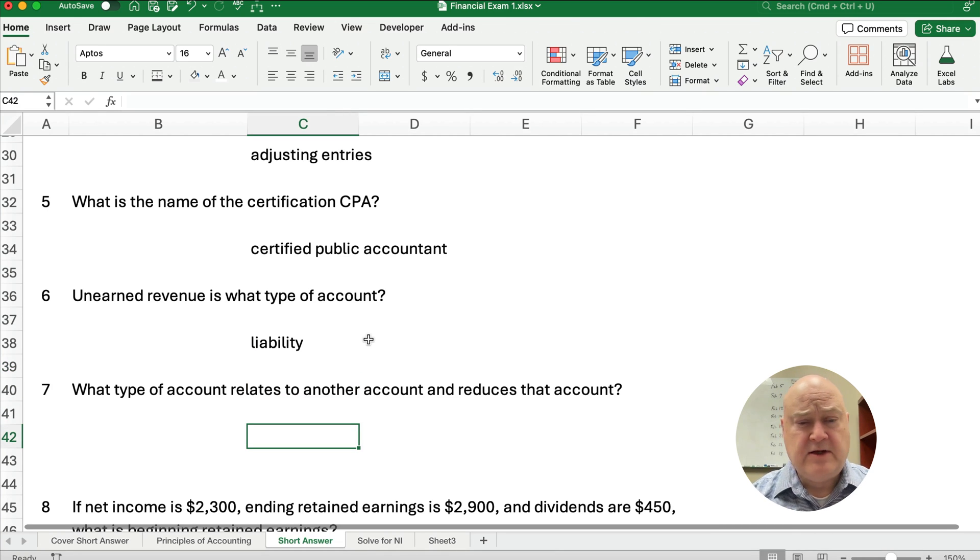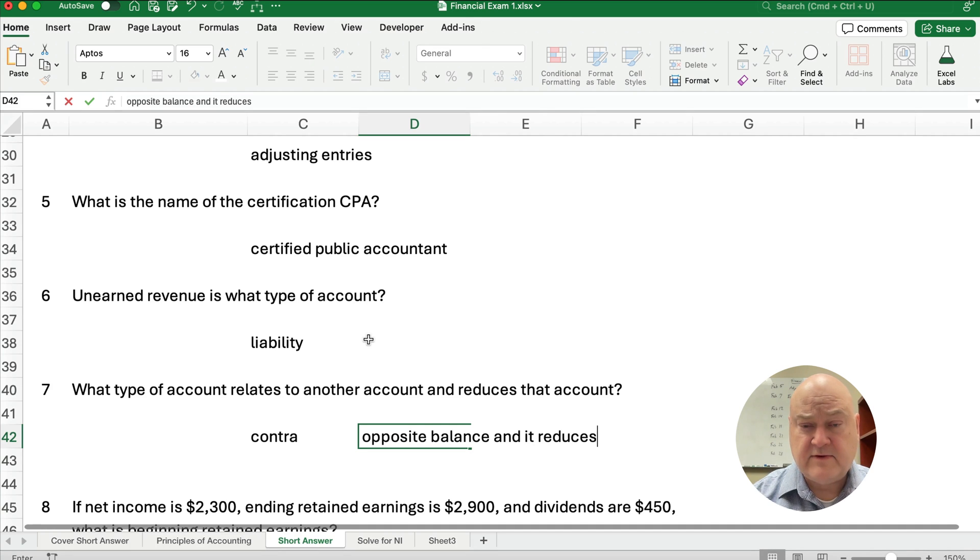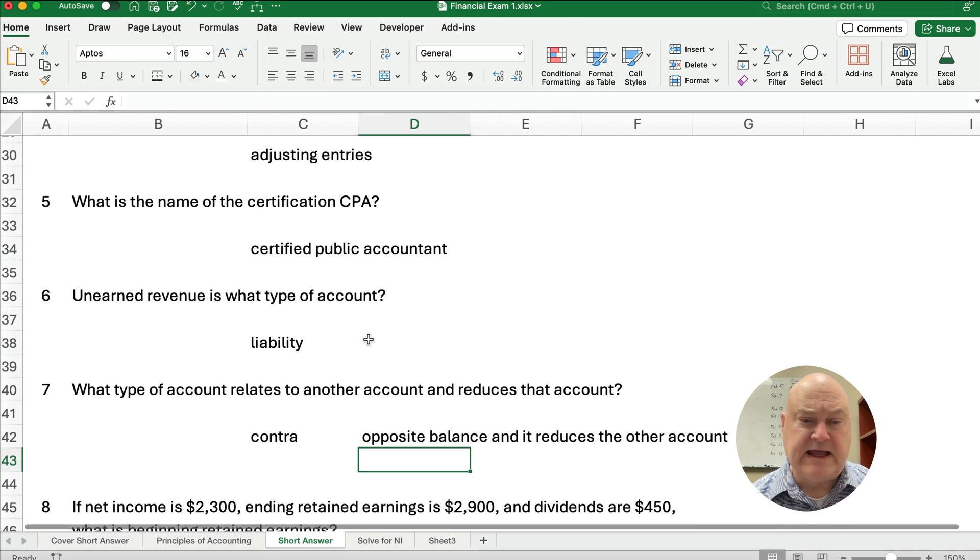What type of account relates to another account and reduces that account? This is called a contra account. A good example would be something like depreciation. You have the asset minus the depreciation, so that depreciation account is a contra asset. The one that you've seen so far in chapters one and two are dividends. Dividends is a contra equity. It's an equity, but it's the opposite of and reduces. So a contra account is the opposite balance and it reduces the other account.